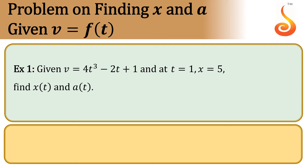Problems on finding x and acceleration when velocity is given as a function of time. Example 1: Given velocity as a function of time is equal to 4t³ minus 2t plus 1, and that at t equals 1 second, x equals 5 meters. Find the position of the particle as a function of time and the acceleration of the particle as a function of time.